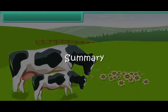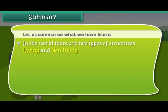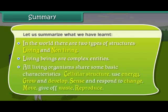Let us summarize what we have learned. In the world there are two types of structures: living and non-living. Living beings are complex entities. All living organisms share some basic characteristics: cellular structure, use of energy, growth and development, sense and respond to change, movement, and giving off waste.